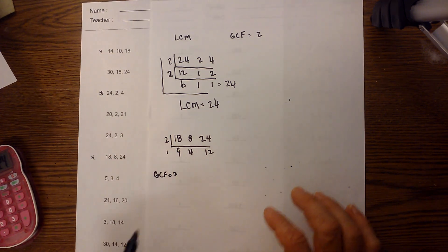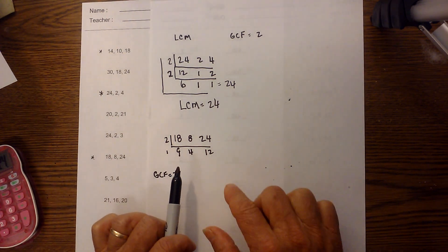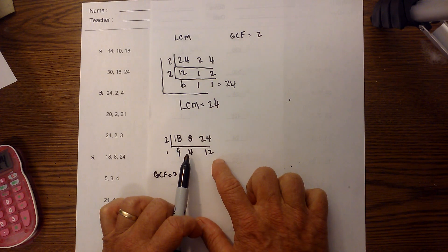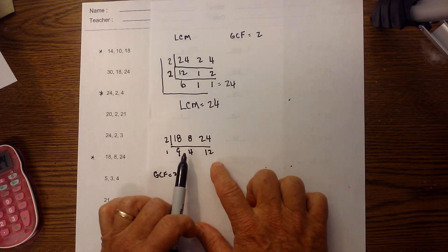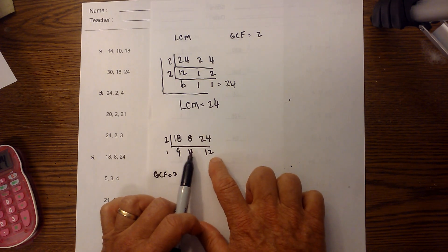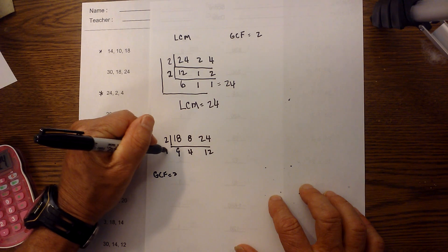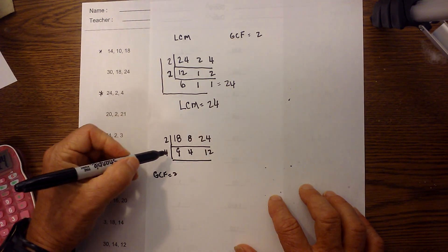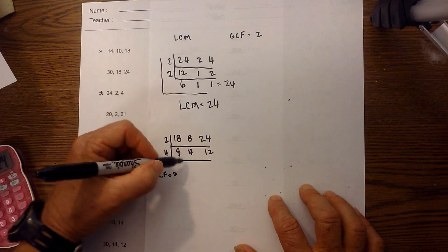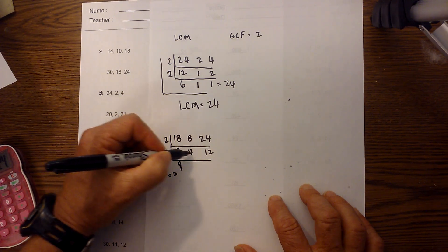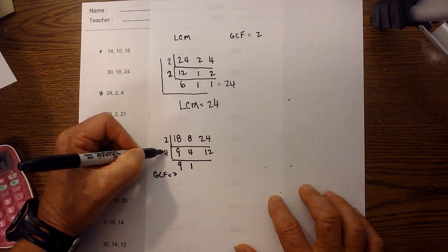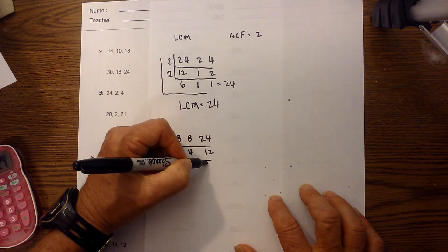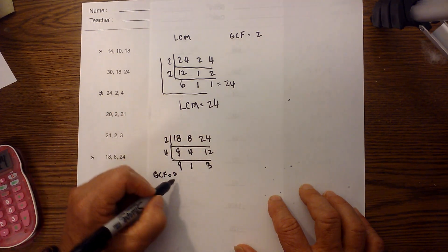Now I check carefully: are there any pairs of numbers that will divide into each other? Yes, 4 will go into 12. I'm going to write 4 on the outside and draw a line underneath. 4 will not go into 9, so I bring the 9 straight down. 4 goes into 4 one time, and 4 goes into 12 three times.